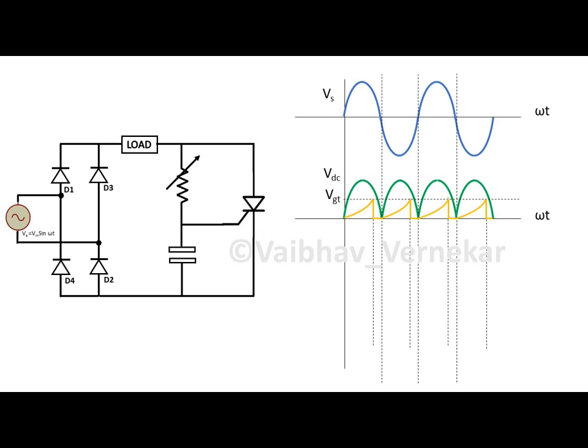The voltage waveform of the capacitor thus is identical and continues for the rest of the cycle. The thyristor when in blocking state follows the input waveform. Once triggered into conduction, the voltage across it drops to zero. This pattern is depicted in the waveform VT.